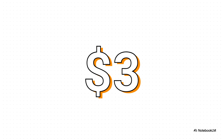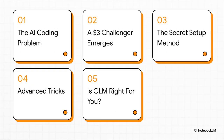Not $30. Not $300. Three bucks. That's the price for the GLM coding plan, and it's what we're going to break down today. Here's our game plan: we're going to start with the problem everyone's facing, then introduce this $3 challenger. After that, I'll show you the secret sauce for setting it up, a few advanced tricks, and then we'll figure out if this thing is actually the right fit for you.